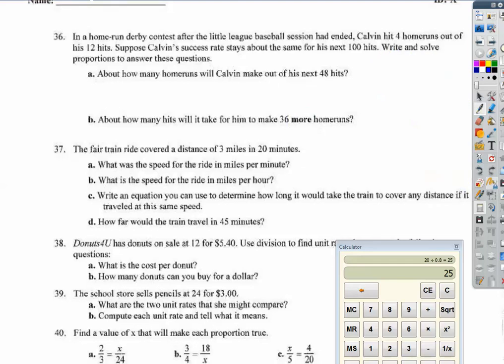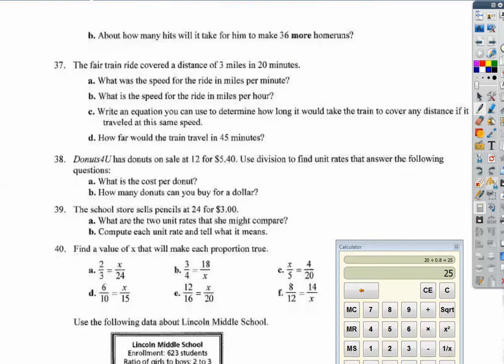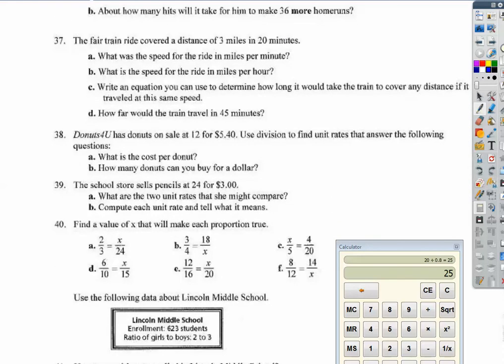Number 37. A fair train ride covered a distance of 3 miles in 20 minutes. What is the speed in miles per hour? Well, if I go 3 miles in 20 minutes and in an hour, that's 60 minutes. My scale factor here is 3. So I'm going to go 9 miles. I'm going to go 9 miles per hour.